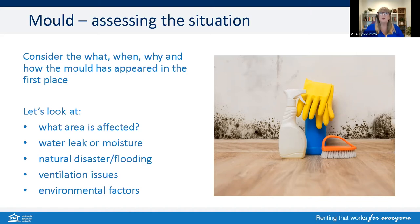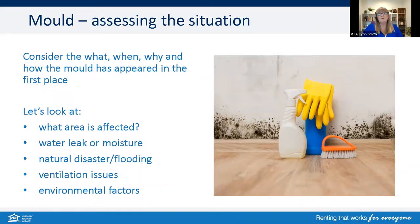Has the mould been caused by a water leak or moisture? For example, if it's a roof leak, that would fall to the owner to repair the roof and then treat and clean the mould. Has the mould appeared because of a recent natural disaster or storm flooding? Again, this would fall back to the owner. People do want to work together to get the job done, so we welcome both owners and tenants to do this together, particularly in stressful times just after a natural disaster.